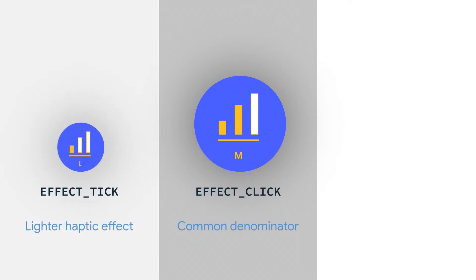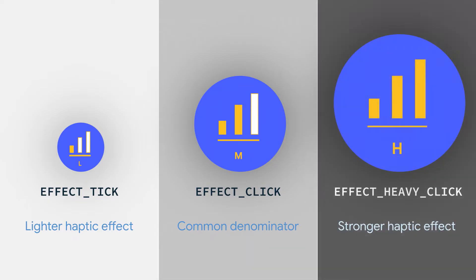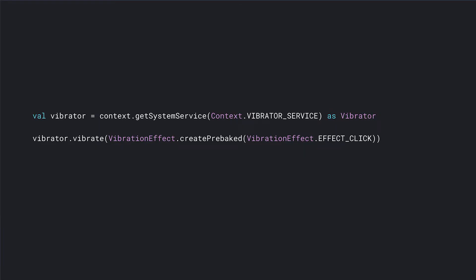If you want a lighter haptic feel, you can use EFFECT_TICK. For a stronger, more intense haptic, you can use EFFECT_HEAVY_CLICK. There's also EFFECT_DOUBLE_CLICK, which is just two clicks one after another. Using this is pretty easy — you just call VibrationEffect.createPrebaked and pass it the constant of the effect you want to use.